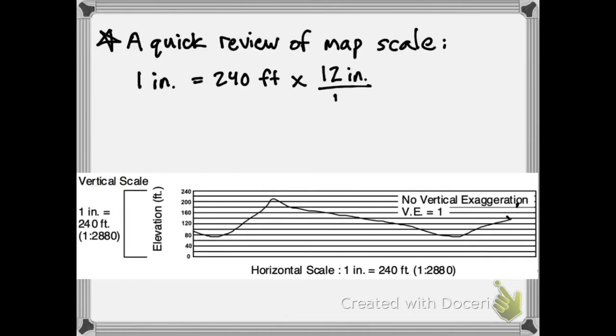You can simplify this by multiplying by the equivalency 12 inches equals one foot, which is the same as multiplying by one, which we can do as much as we want. And that equals 2,880. If you cancel the feet, you're left with inches. So that's 2,880 inches.